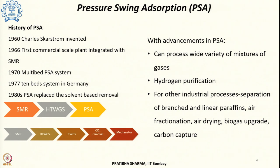About 40 different types of gases can be separated using pressure swing adsorption. It is not only used for hydrogen purification but also for various other industrial processes like separation of branched and linear paraffins, air fractionation, air drying, carbon capture, and biogas upgradation.